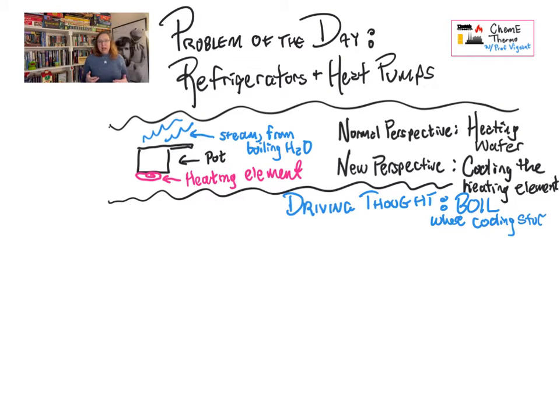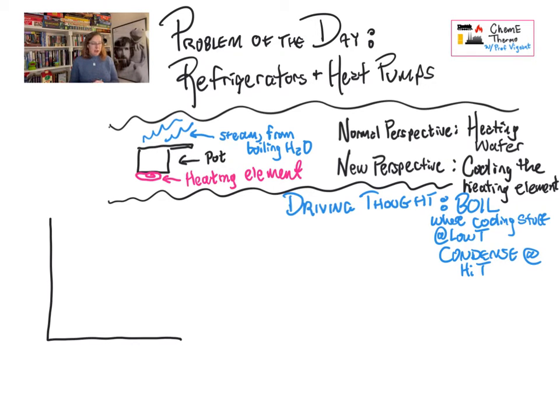And that's a big part of why refrigerants, which are the working fluids that are moving around in the tubes in your refrigerators and air conditioners, that's a big reason that those are specially designed chemicals. They have to have the right temperatures for condensation and evaporation.